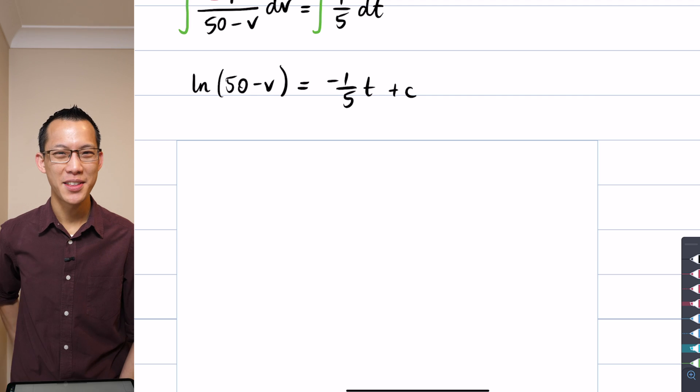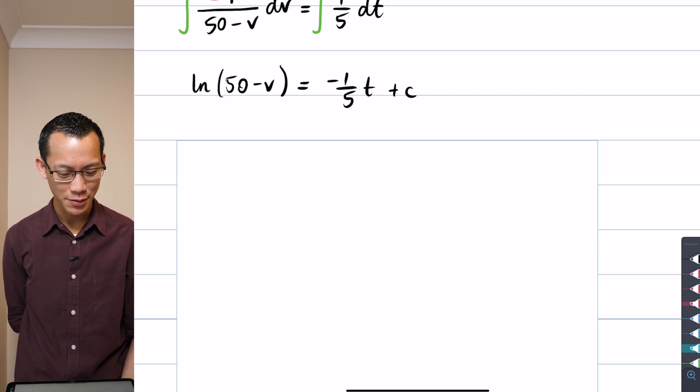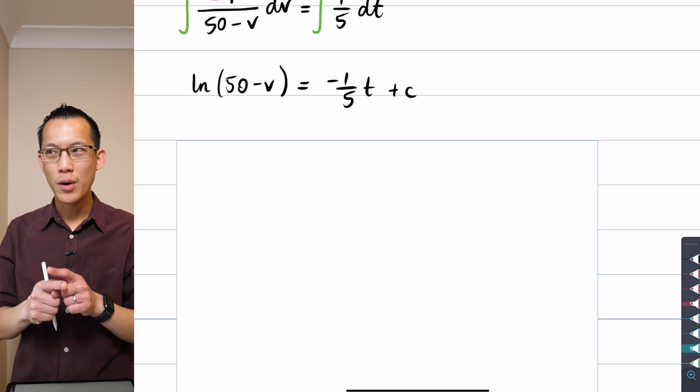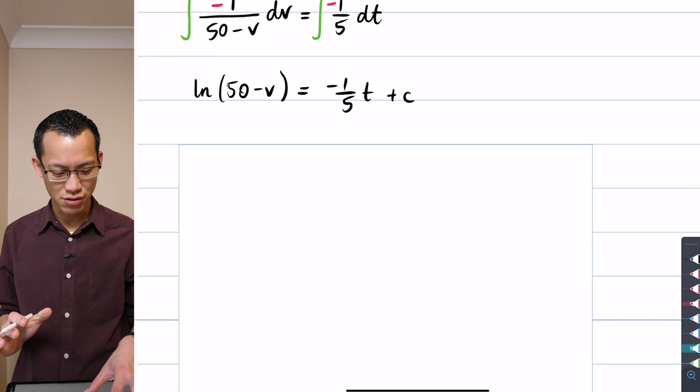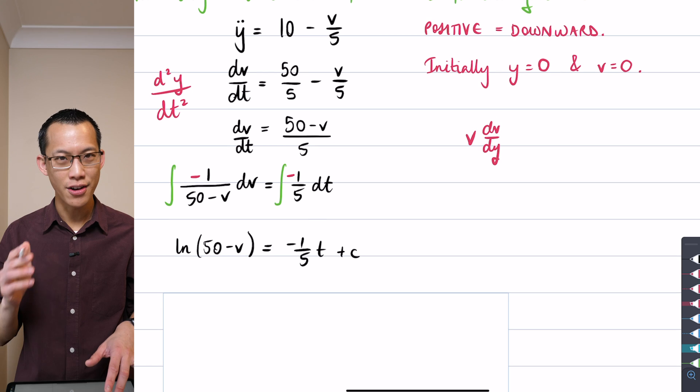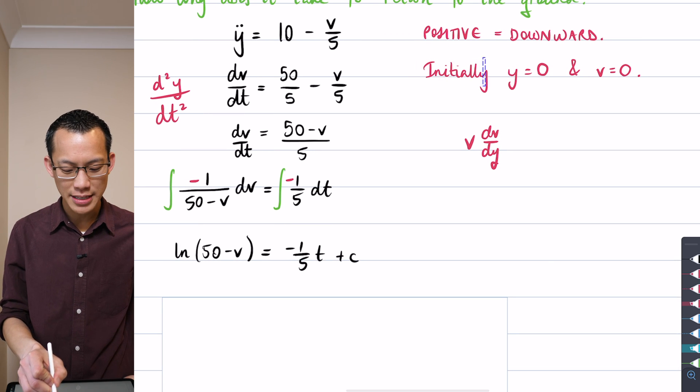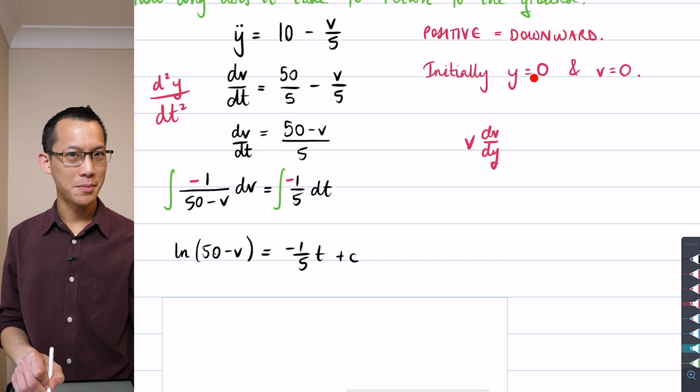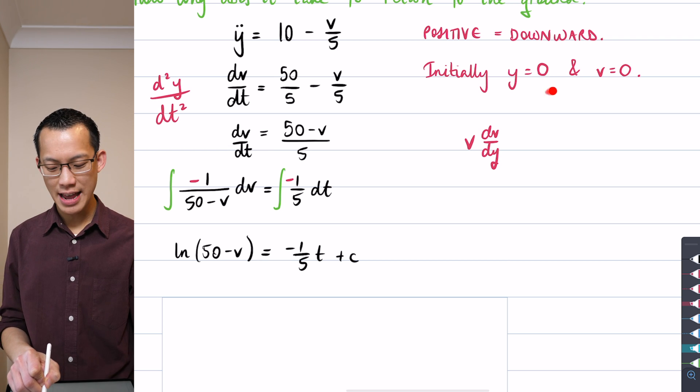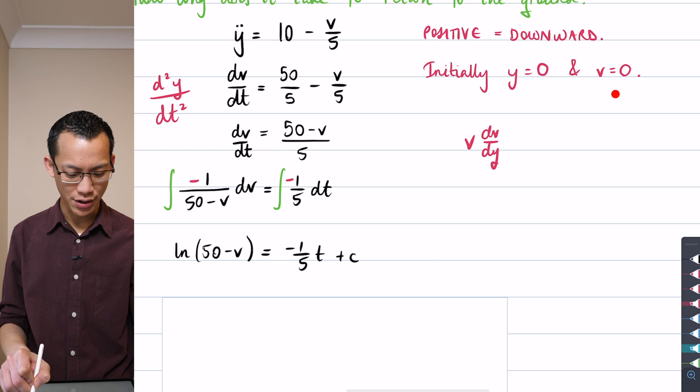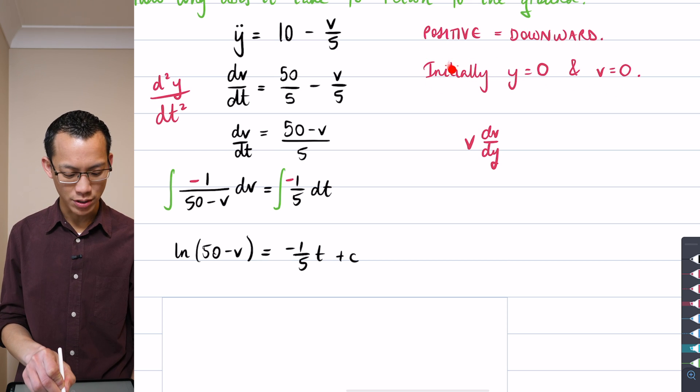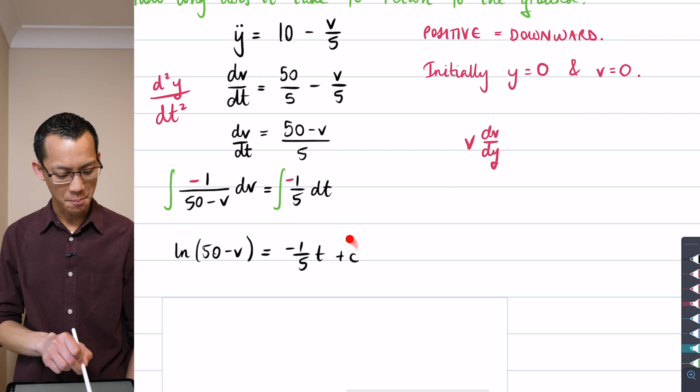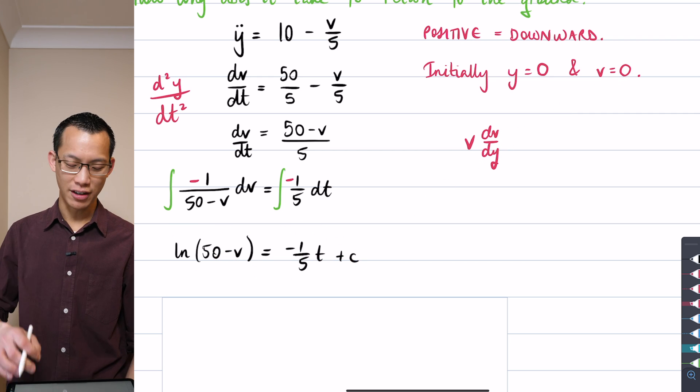So now I have to find the constant of integration. As we've done before, I'm going to use initial conditions, but just remember, we've got a whole different set of initial conditions than we did earlier. So I initially am setting the maximum height up there as the origin, and my velocity is zero. So this is t equals zero, and you can see here I'm going to take advantage of this v equals zero to evaluate the v and the t. That'll give me my constant.